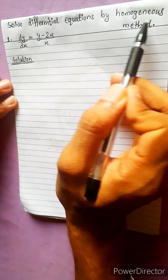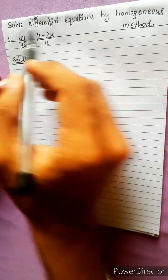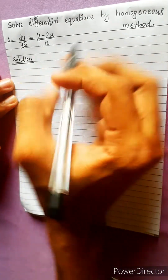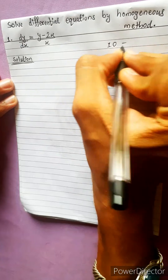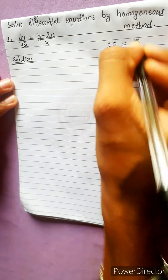Solve the differential equation by the homogeneous method. I will start here. 10 equals to 5.